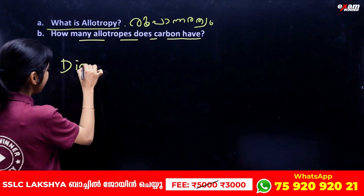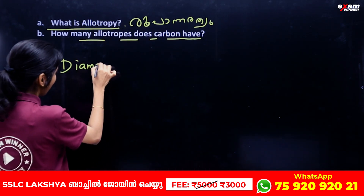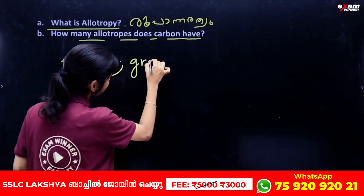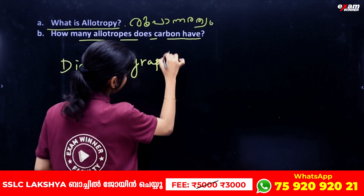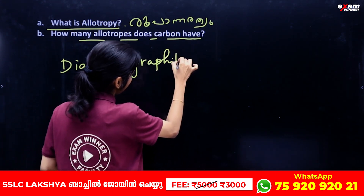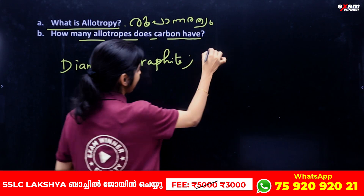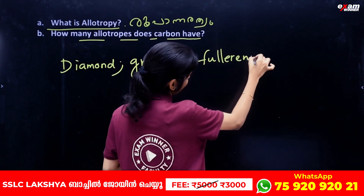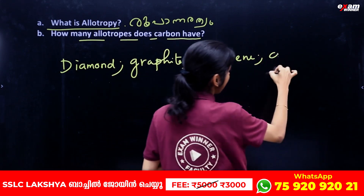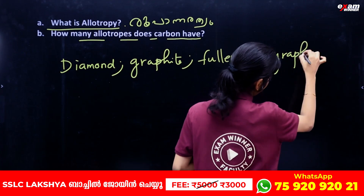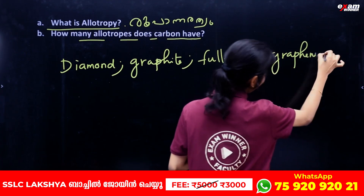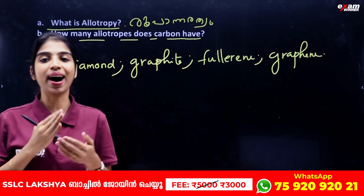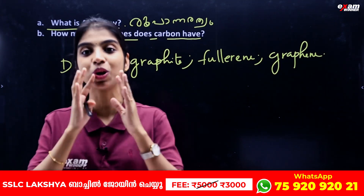The allotropes of carbon are Diamond, Graphite, Fullerene, and Graphene. When we study carbon, we use these allotropes.